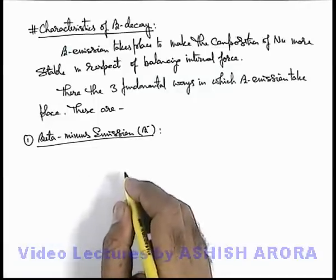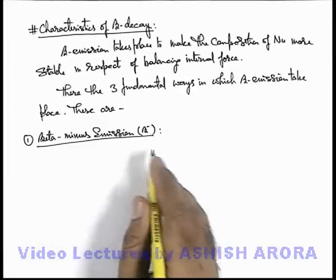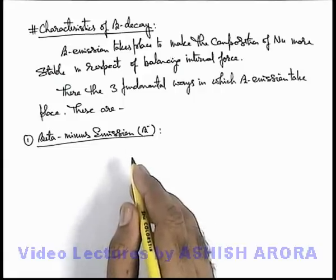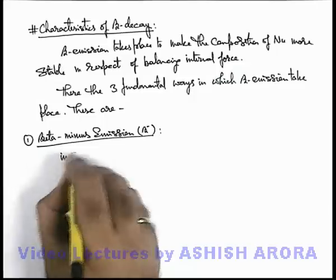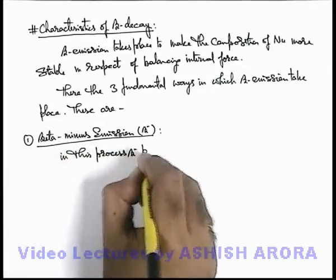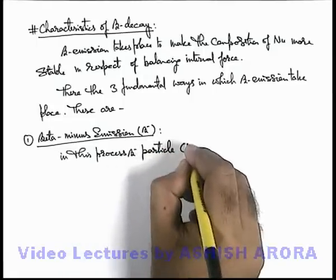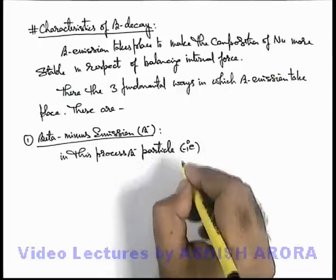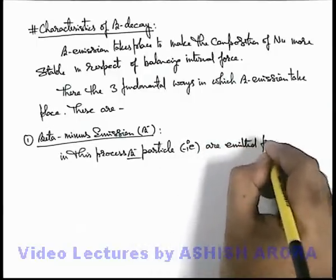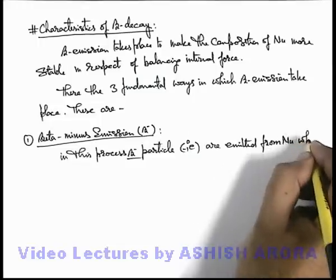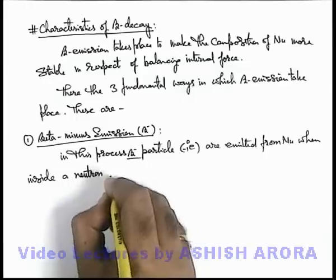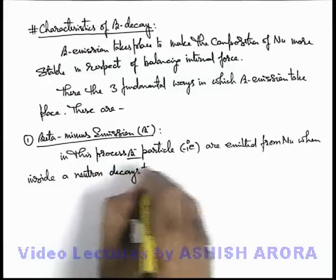Beta minus emission is executed whenever inside the nucleus the number of protons are relatively less compared to the number of neutrons. In this process, beta minus particles, which are basically electrons with mass number zero and charge minus 1, are emitted from the nucleus when inside a neutron decays to a proton.